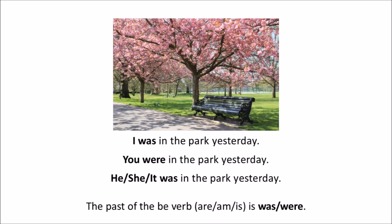The past of the be verb is was and were. I was in the park yesterday. You were in the park yesterday. He was in the park yesterday.